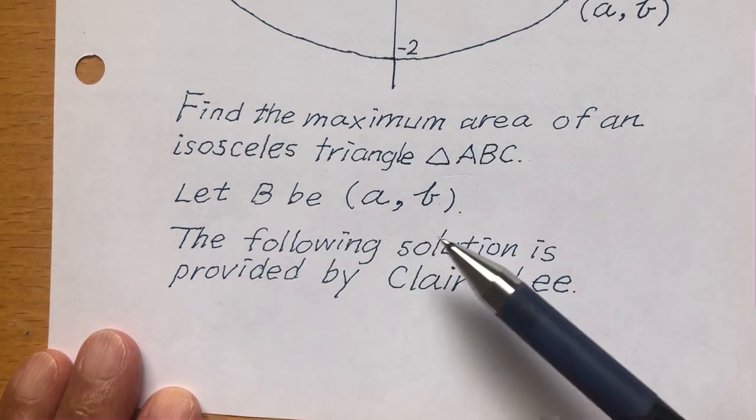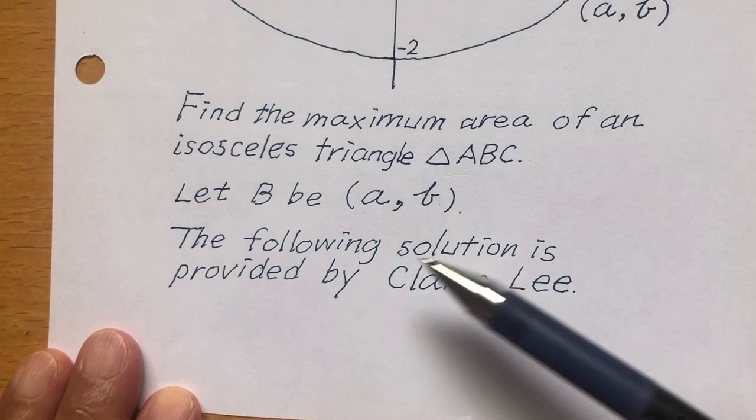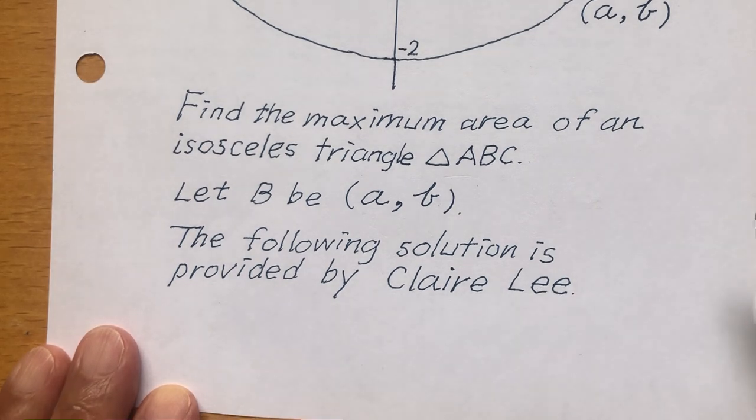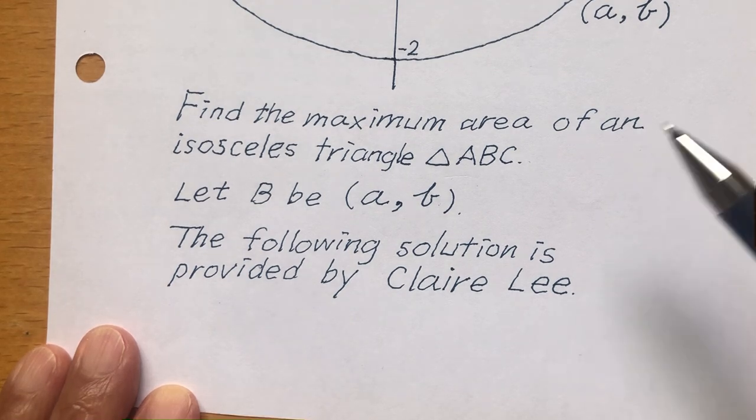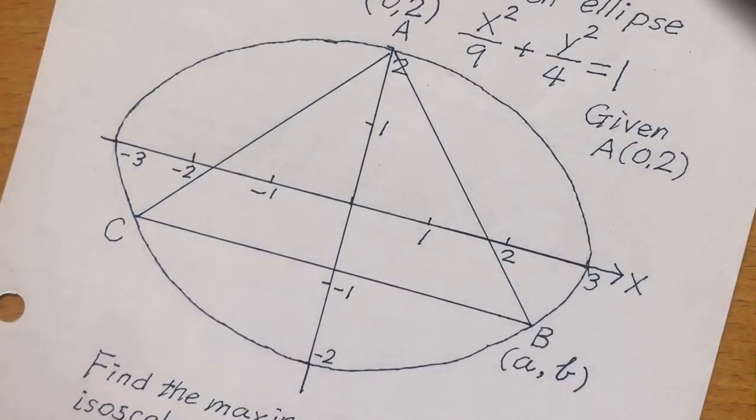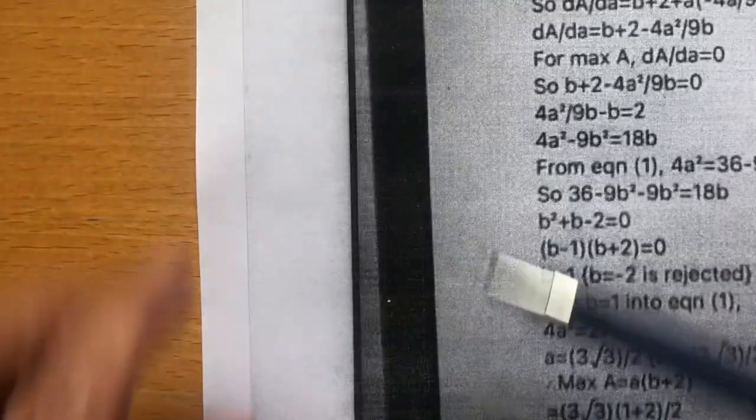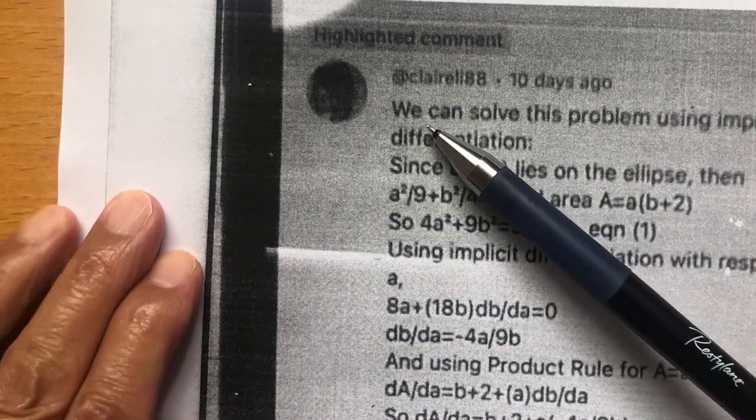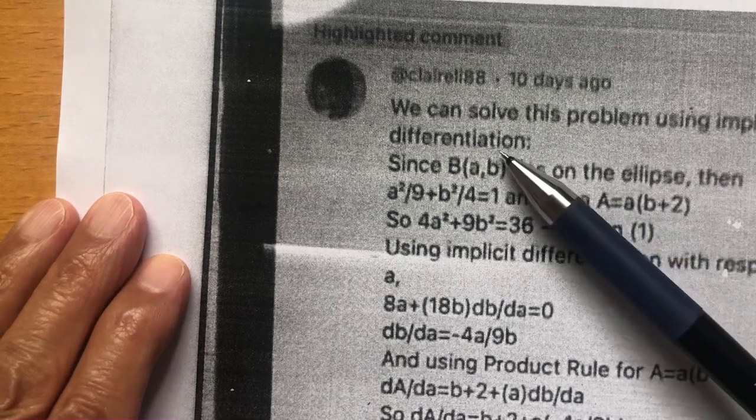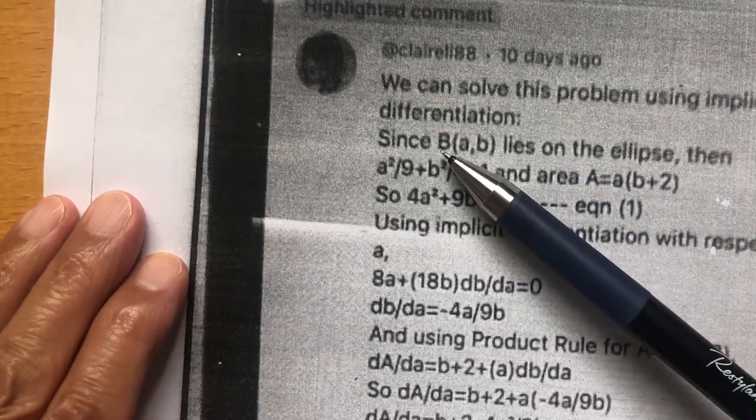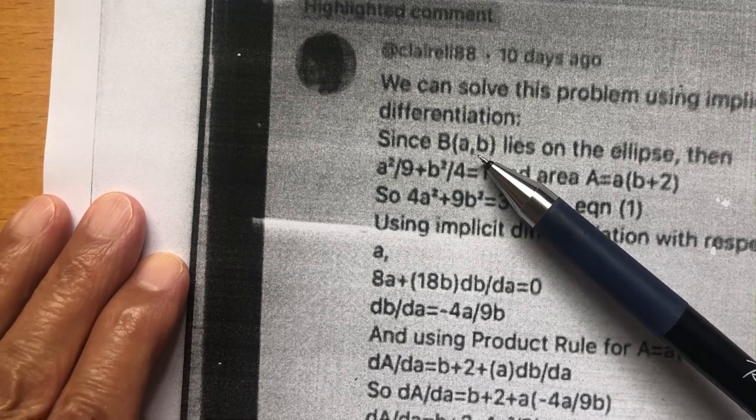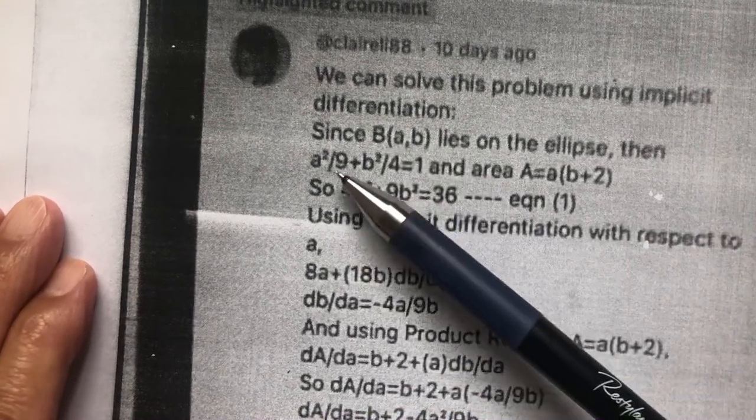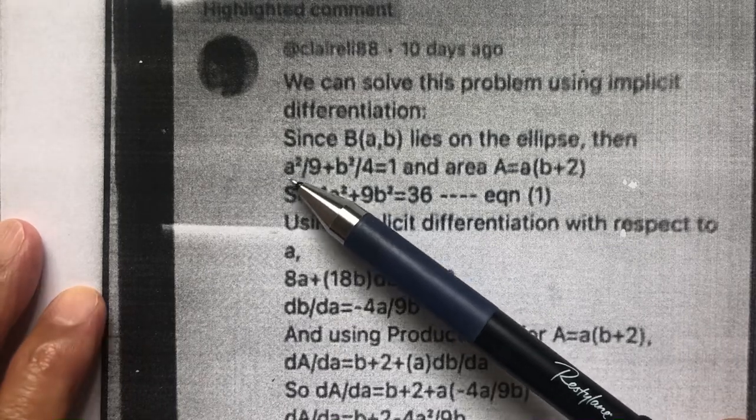The following solution is provided by Claire Lee. Thank you, Claire. So let's start. We can solve the problem using implicit differentiation. B, we give coordinates (a,b). B lies on the ellipse. Therefore, (a,b) satisfy the equation of the ellipse. So this is the result.